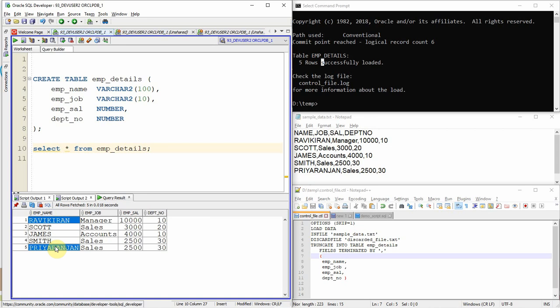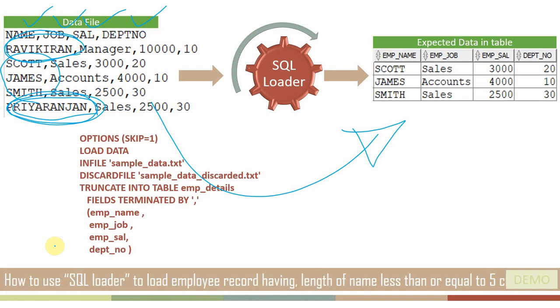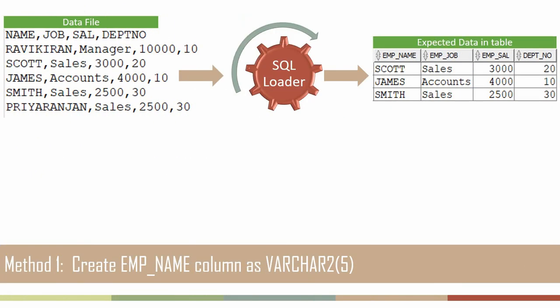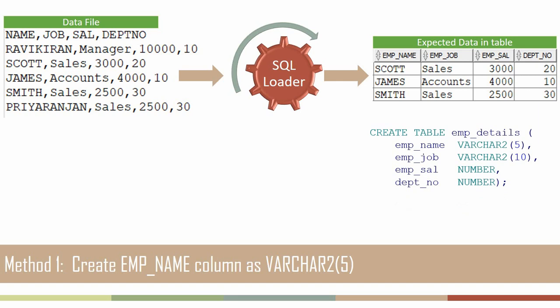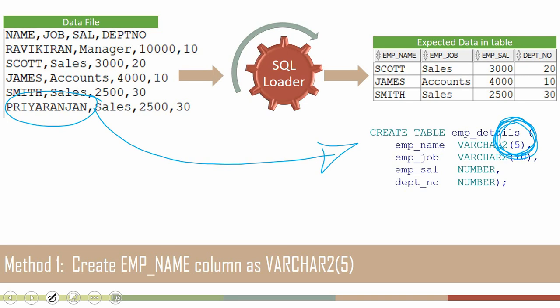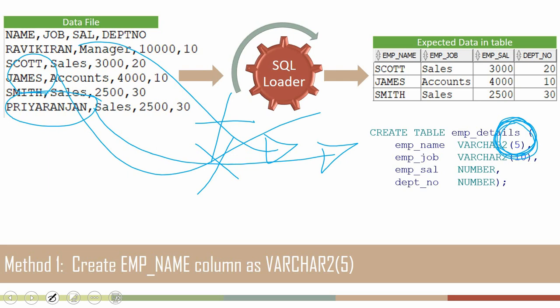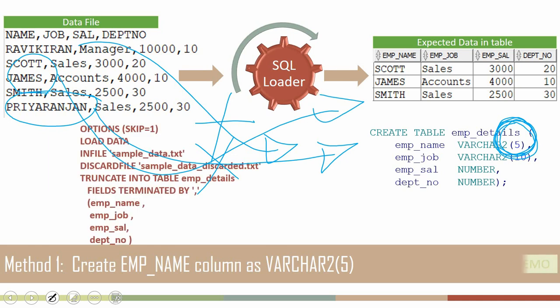Now the expectation is to exclude Ravikiran and Priyaranjan because the length of these two names is more than five characters. The first option is: while creating the employee detail table, define the employee name data type as VARCHAR2(5). Any string longer than five characters will automatically fail to insert, so Ravikiran and Priyaranjan will not get inserted, whereas Scott, James, and Smith will. Let me show you the demo for this first method.